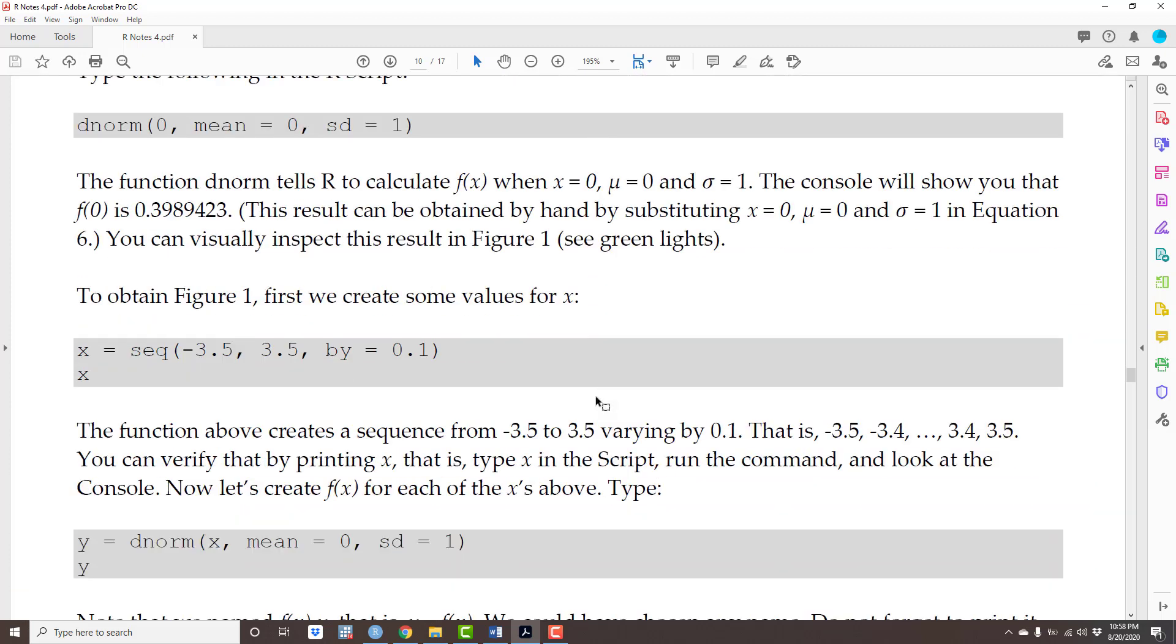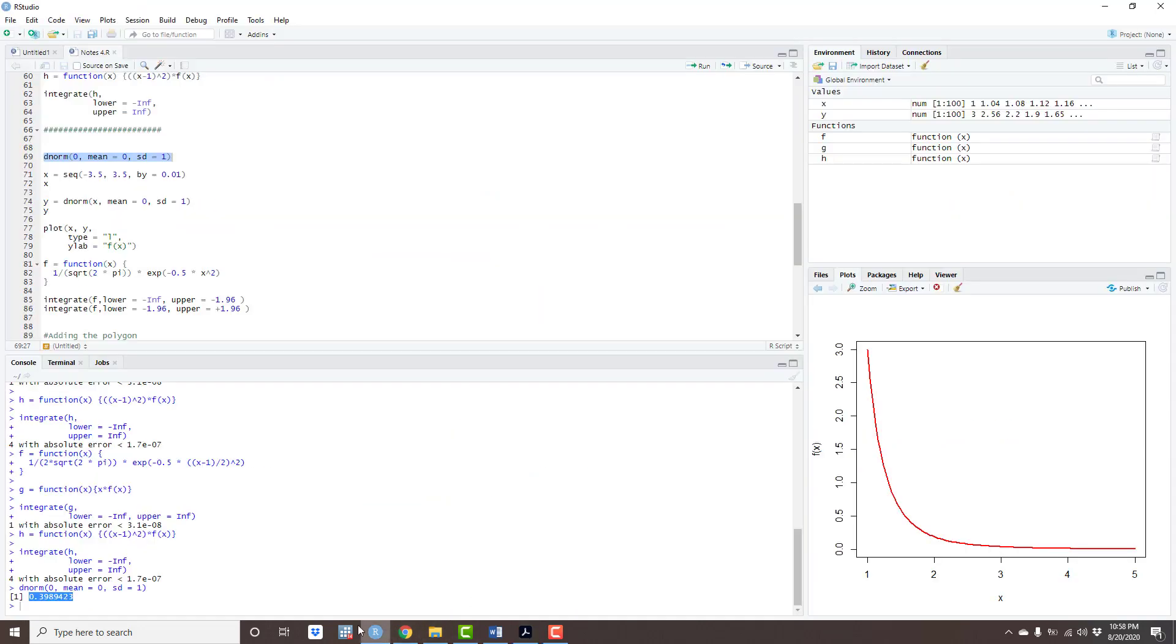Okay, now back to constructing the graph. First I'm gonna create a sequence of x's. It's a vector of x's. It starts from -3.5, it goes all the way to 2.5, and it's increasing by 0.1. So basically the sequence is -3.5, -3.4, -3.3, etc. I'm varying them by 0.1.